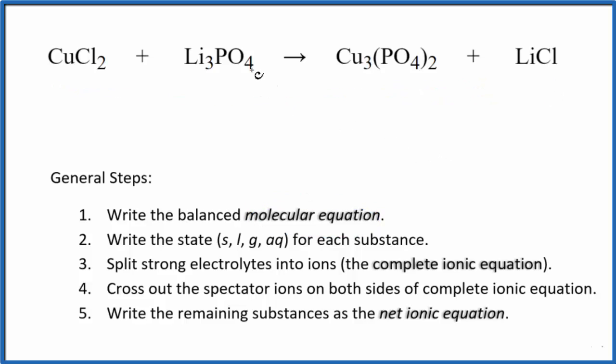We'll balance the phosphate ion first because we have one here and two phosphates here. I'm going to put a two in front of the lithium phosphate. Phosphates are balanced. Now I have two times three, six lithium atoms. Put a six over here, balances the lithium.